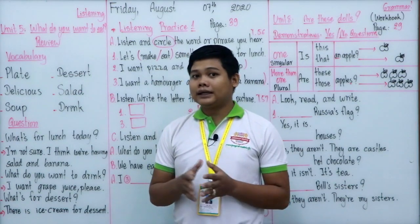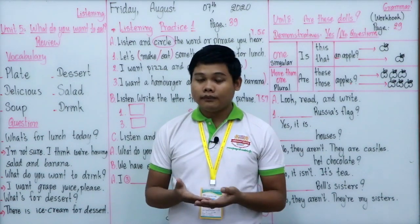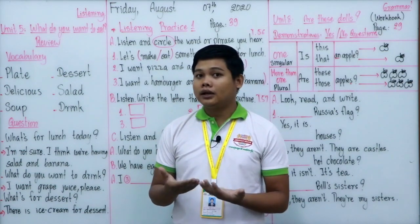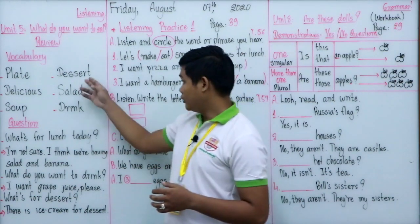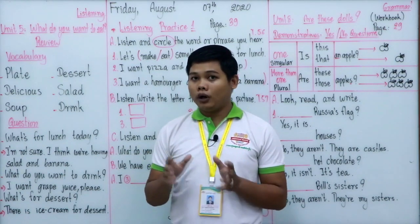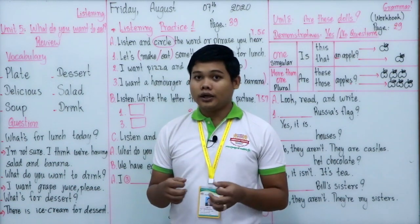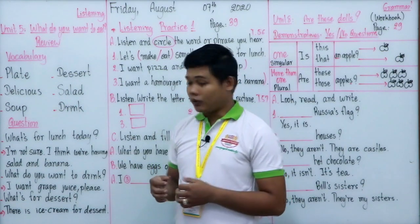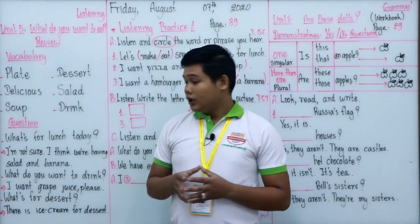Dessert can be fruit, ice cream, or other sweets — something we eat after a meal that tastes sweet. Next is 'salad.' Salad is a kind of food where people mix raw vegetables together with mayonnaise or sauce. It contains a lot of raw vegetables.